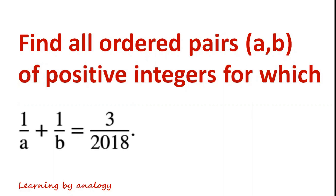Find all ordered pairs A, B of positive integers for which 1/A + 1/B = 3/2018.